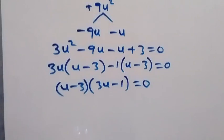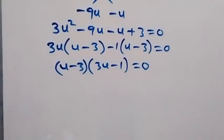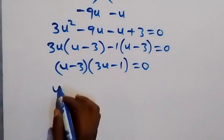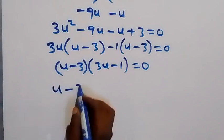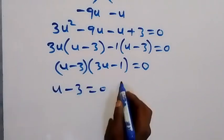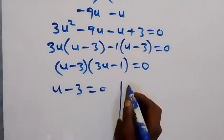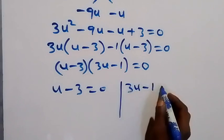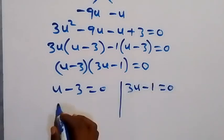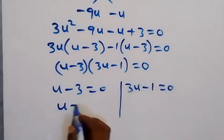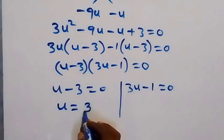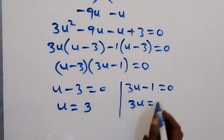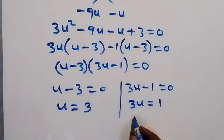Since (u - 3) is common to both groups, we factor it out: (u - 3)(3u - 1) = 0. The two possible cases are u - 3 = 0 and 3u - 1 = 0.